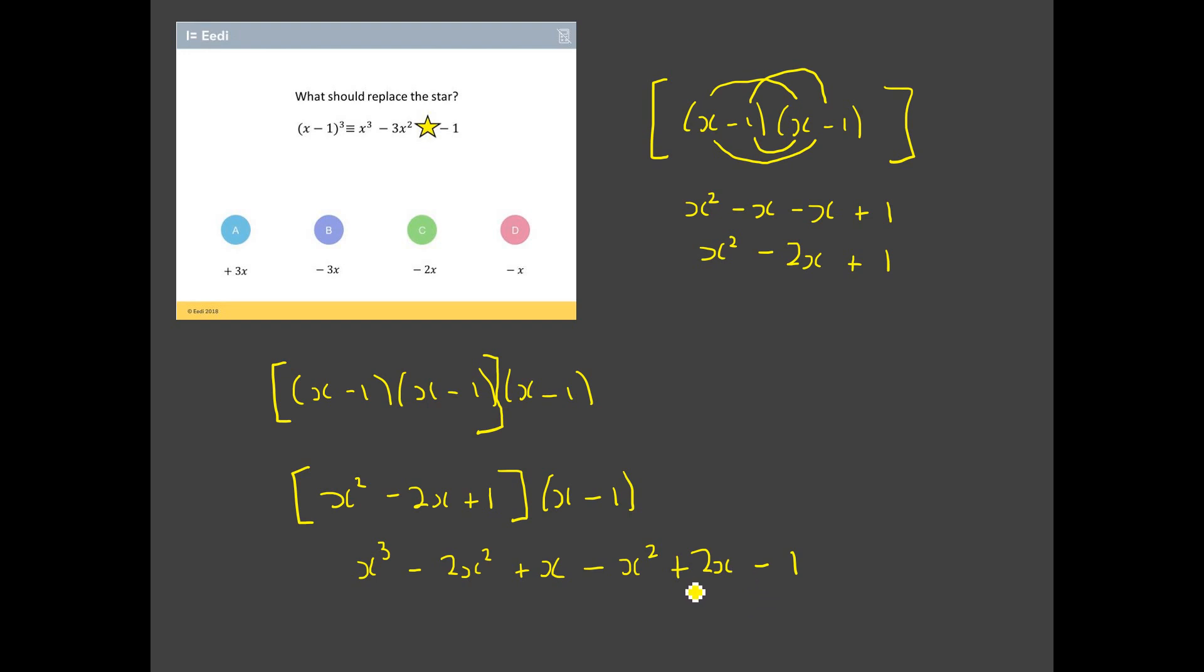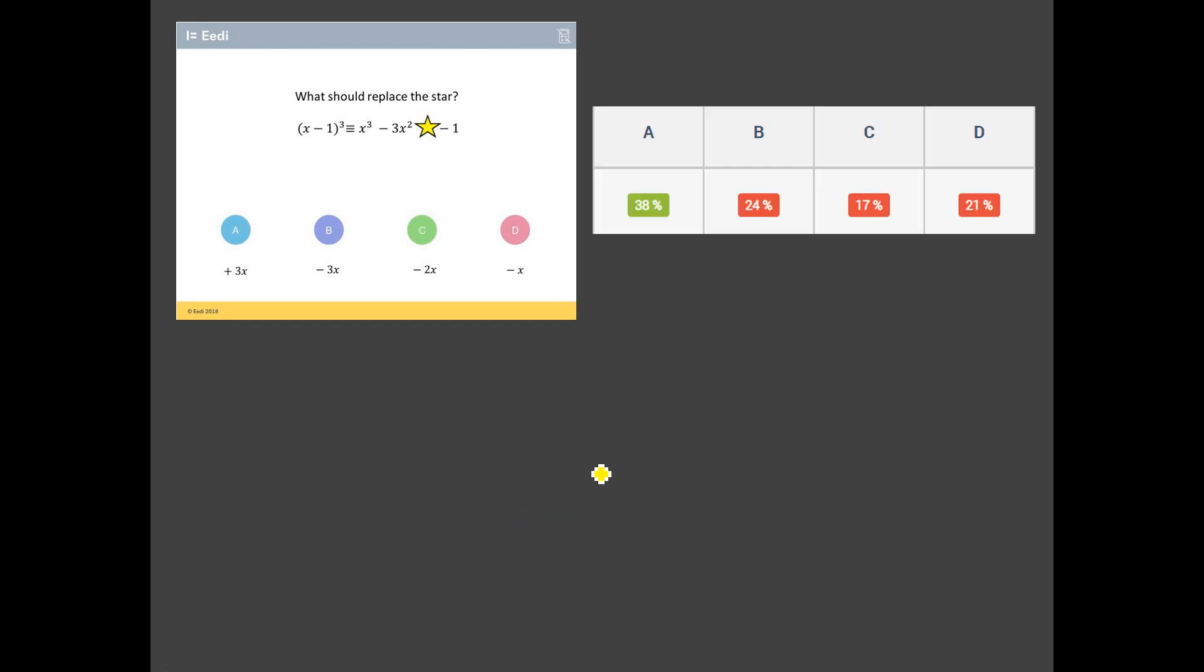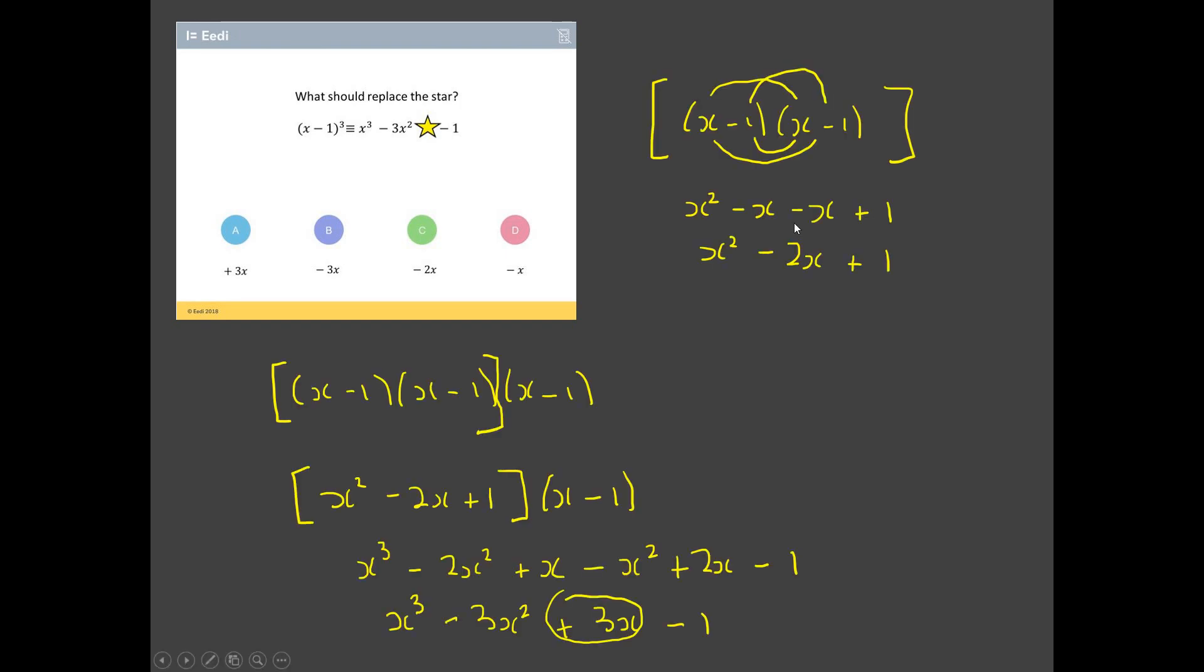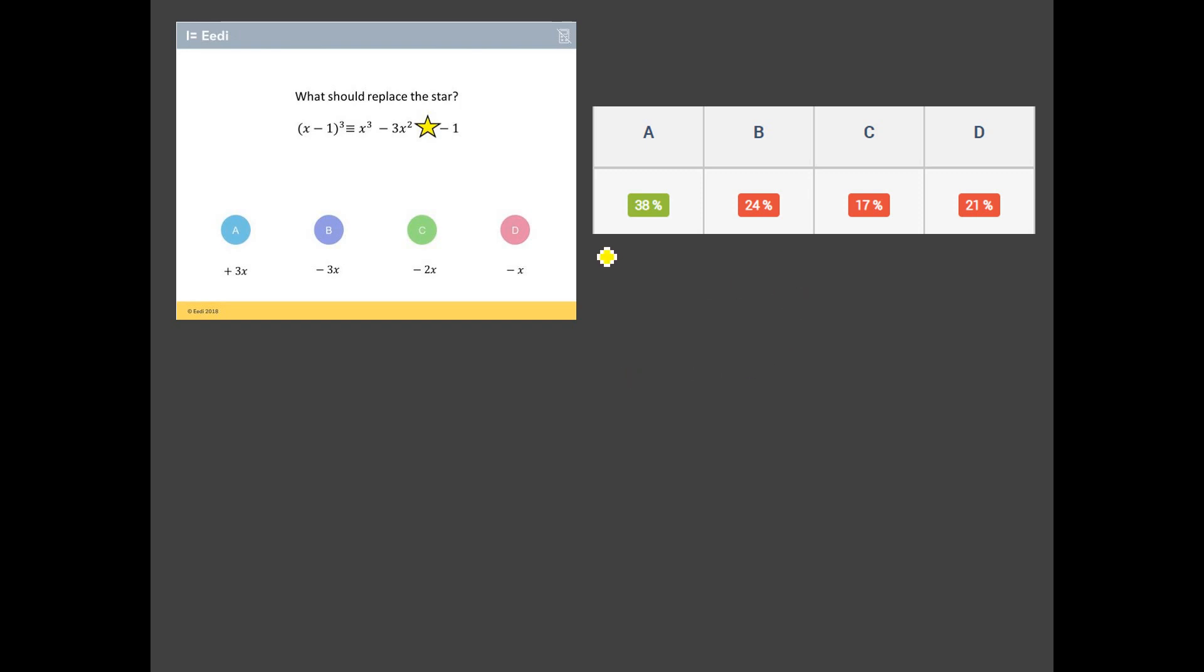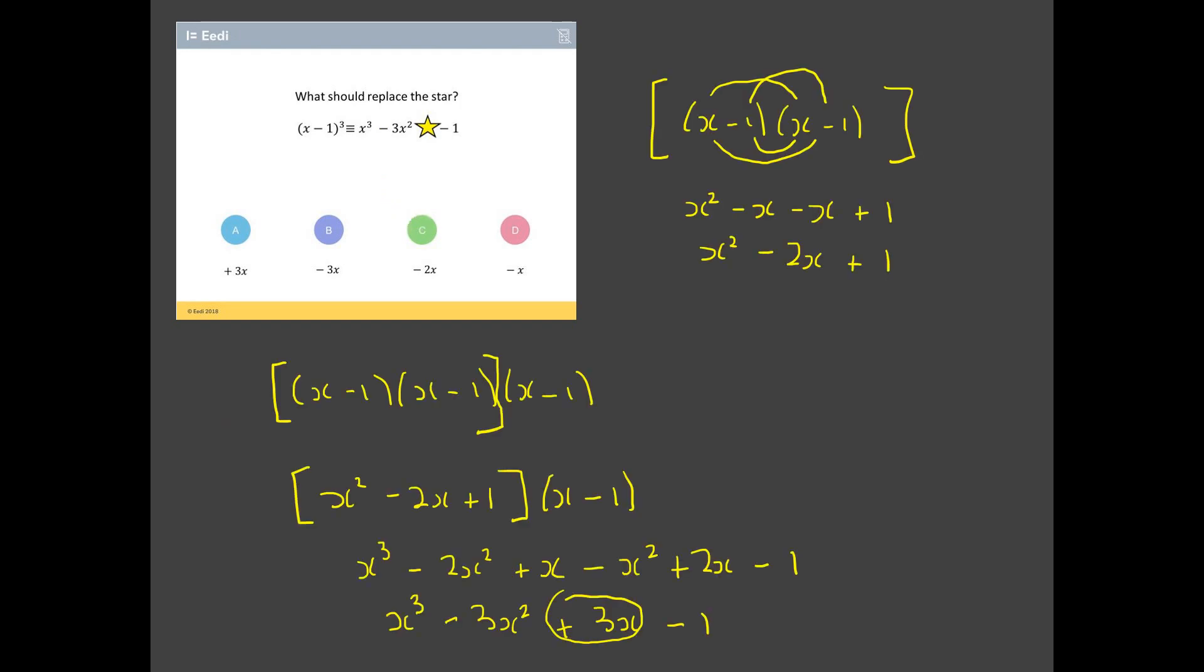Just check each of those because it's very easy to make a sign error. Let's tidy this up as well. I've only got one x³, but I've got negative 2x² take off another x² which gives me negative 3x². Now that's good news - look at that in our answer, it was negative 3x², so that's looking good. I've got positive x plus 2x which gives me plus 3x, and I'm left with a negative one which matches up there. So I've got the term that I needed here underneath that star. I think it's plus 3x, which I think is A. Let's see if we're right. Yes, we are, but only 38% of students agree with us.